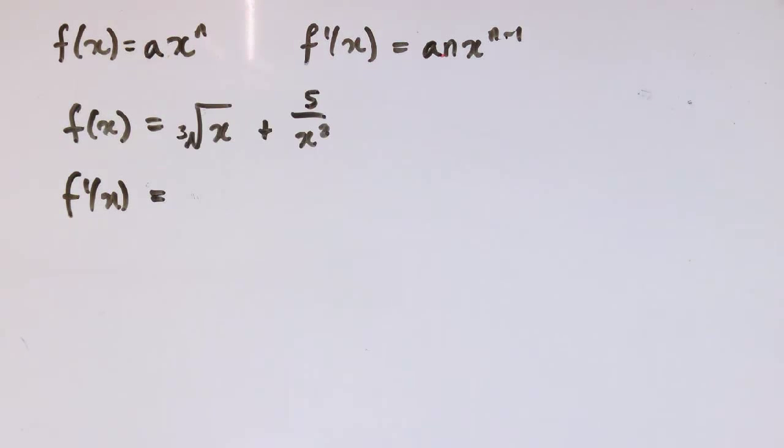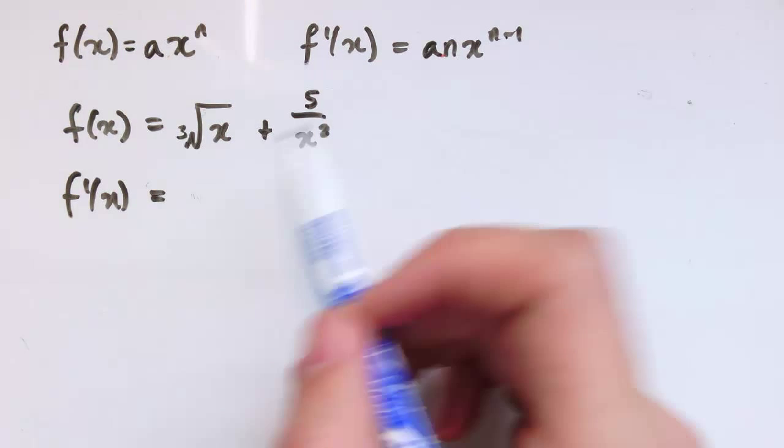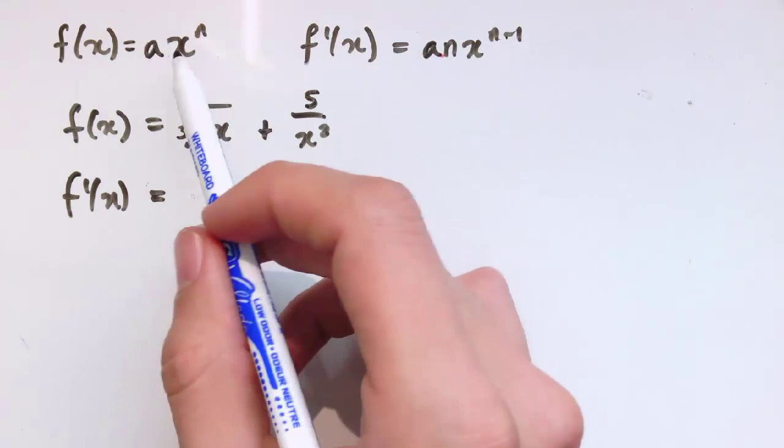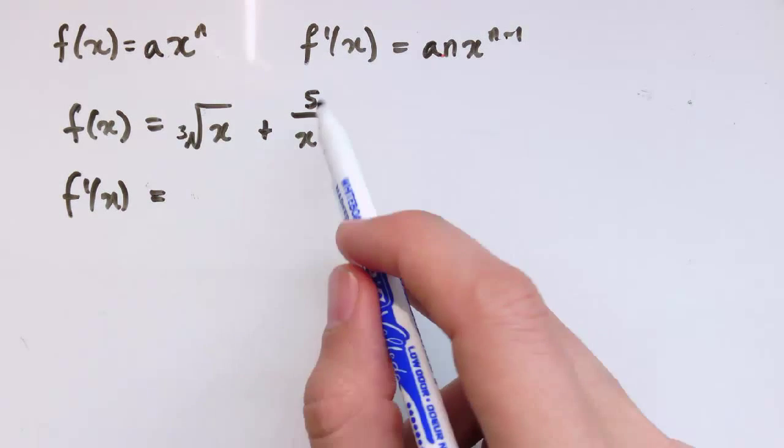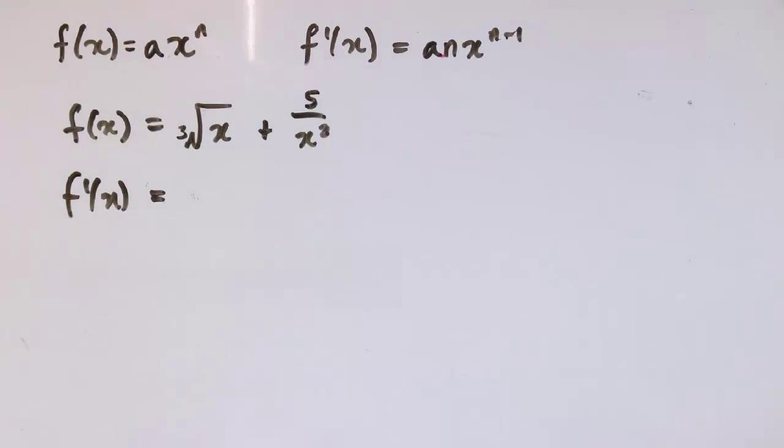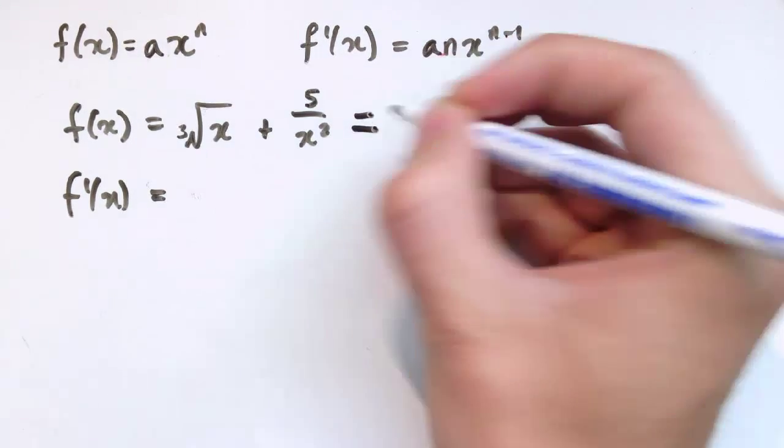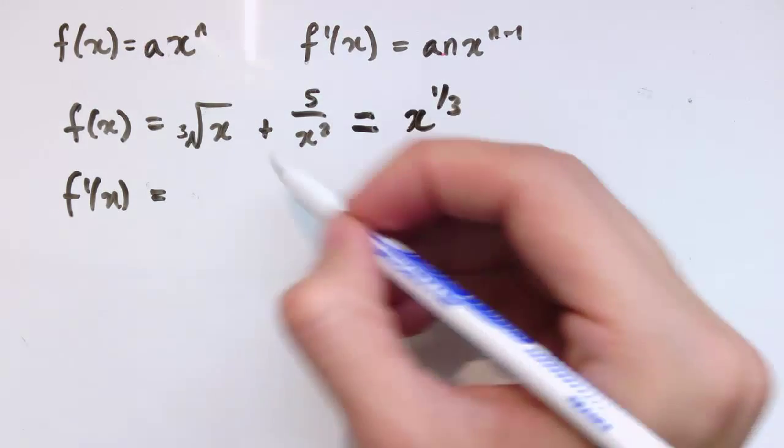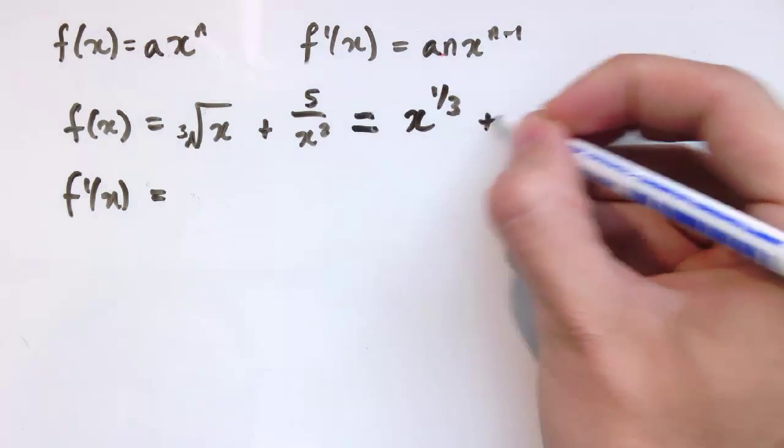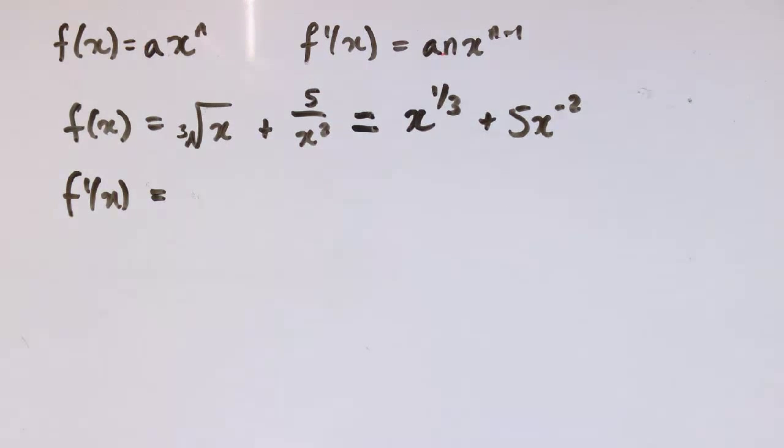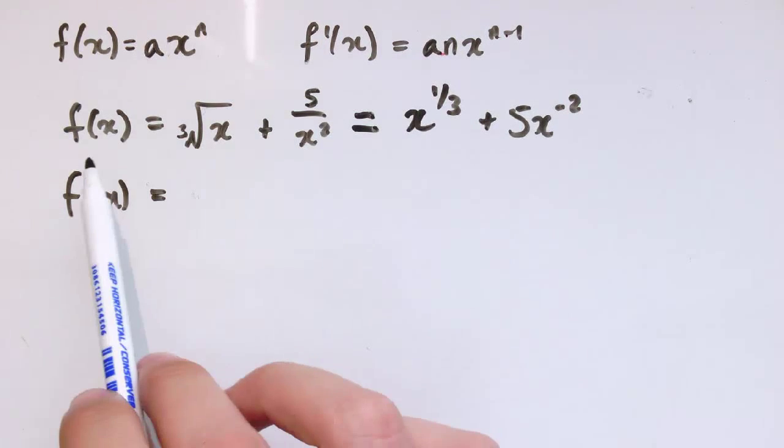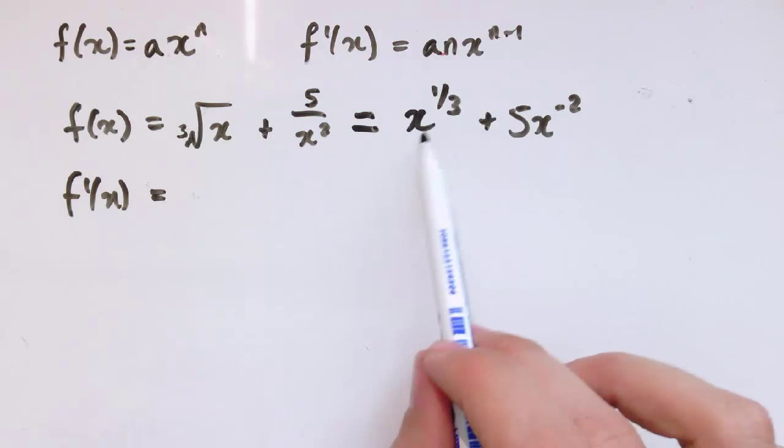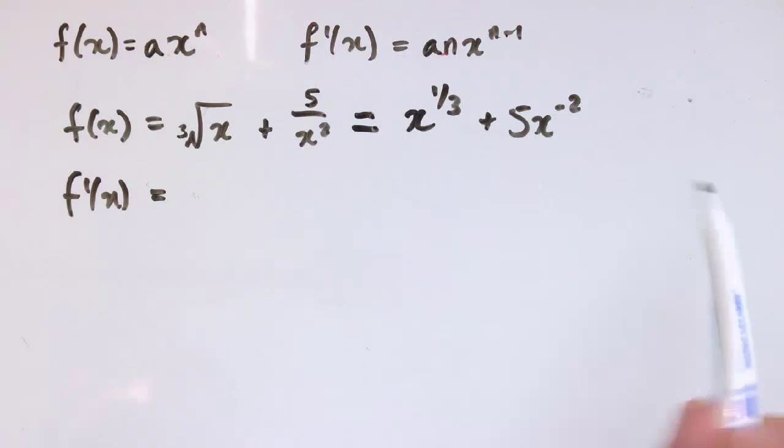Sometimes, you'll get an example like this, where you have to think about what you're doing before you do the differentiation, because these aren't in the form a times x to the n, we've got the cube root of x, and 5 divided by x squared. But, we can rewrite them using what we know about indices, so they are in this form, so we know the cube root of x is x to the 1 third, and 5 divided by x squared, that's 5 times x to the minus 2. There are other videos out there on indices if you're not sure how that bit works. But, for the purpose of this video, what we need to do is to convert these into the form ax to the n, and then we can just differentiate them as before.